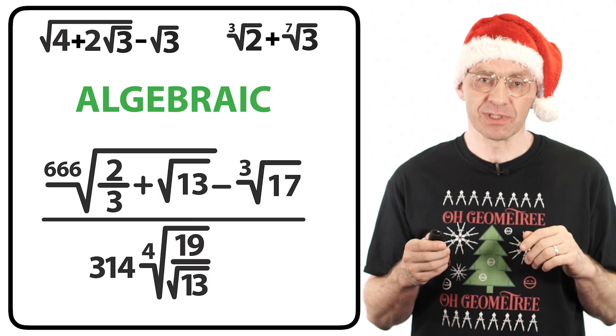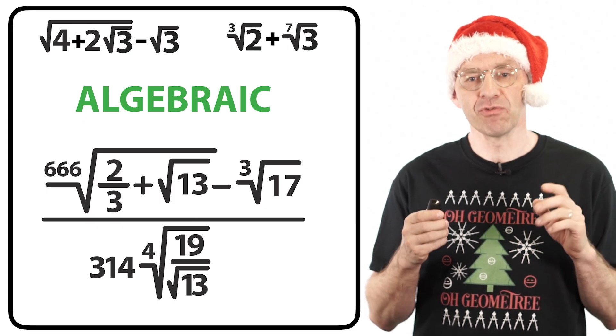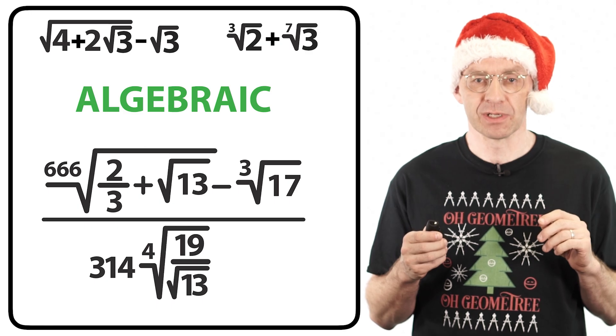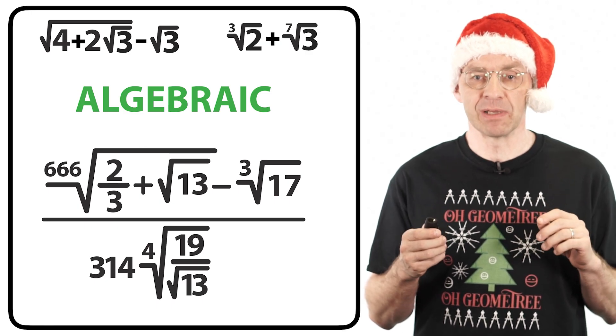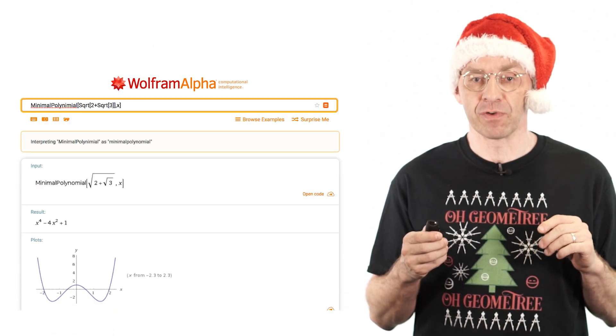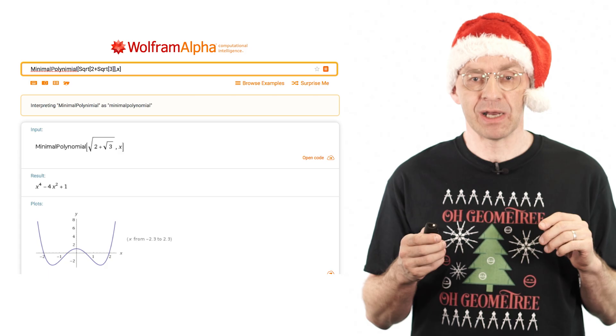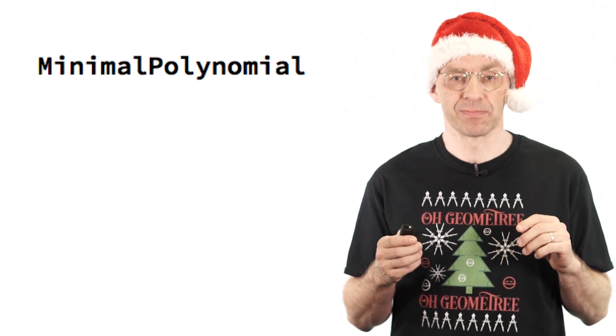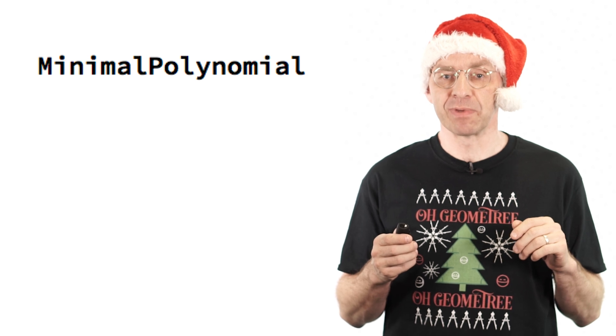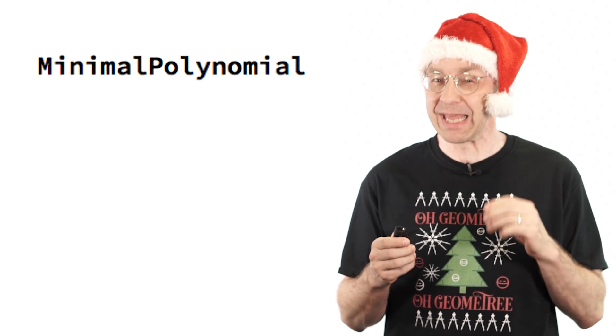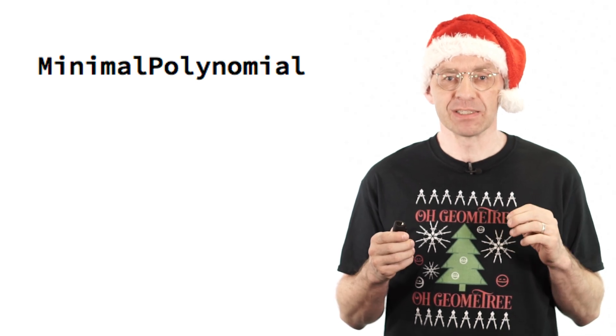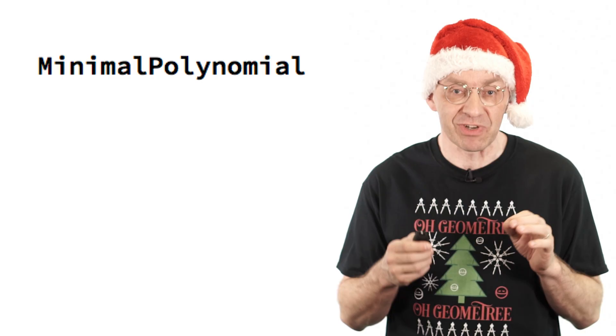There are complex algorithms that, given the input of any rooty expression, will output a suitable polynomial equation. These algorithms have also been implemented as part of computer algebra systems. For example, in Mathematica or Wolfram Alpha, the relevant command is minimal polynomial. In fact, unleashing this command on a rooty number will spit out a special polynomial, an extra special polynomial, the so-called minimal polynomial. That is, a polynomial of lowest possible degree.